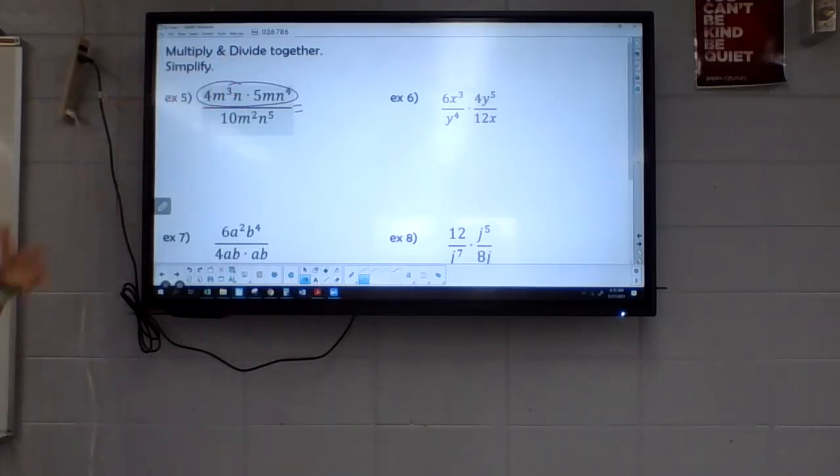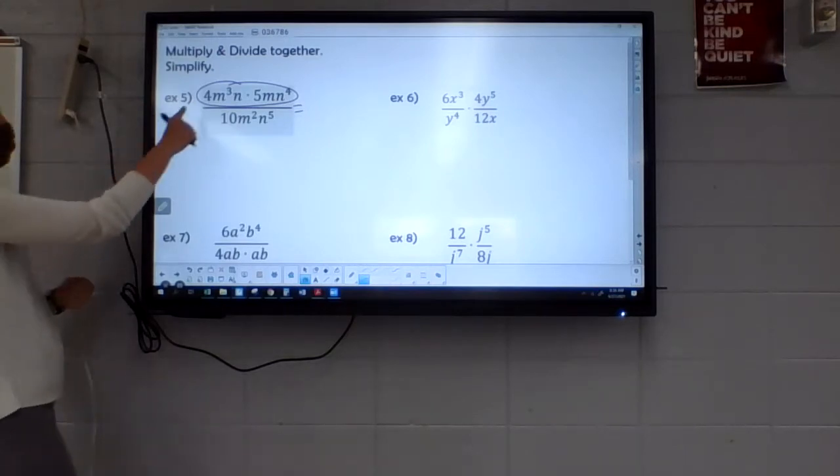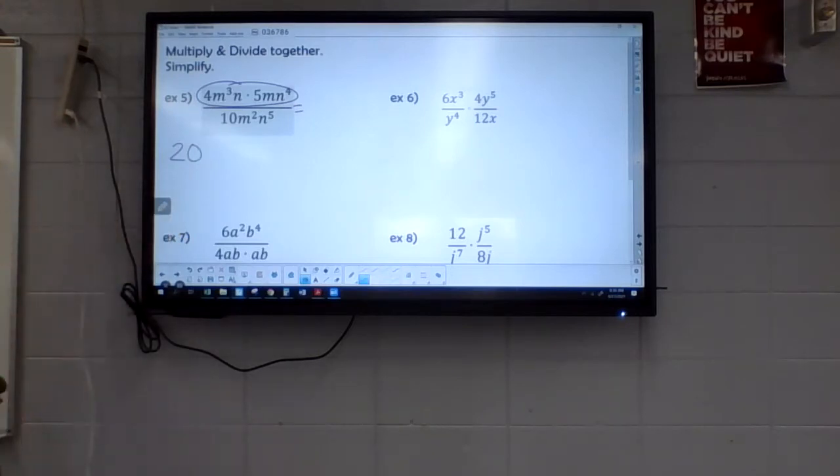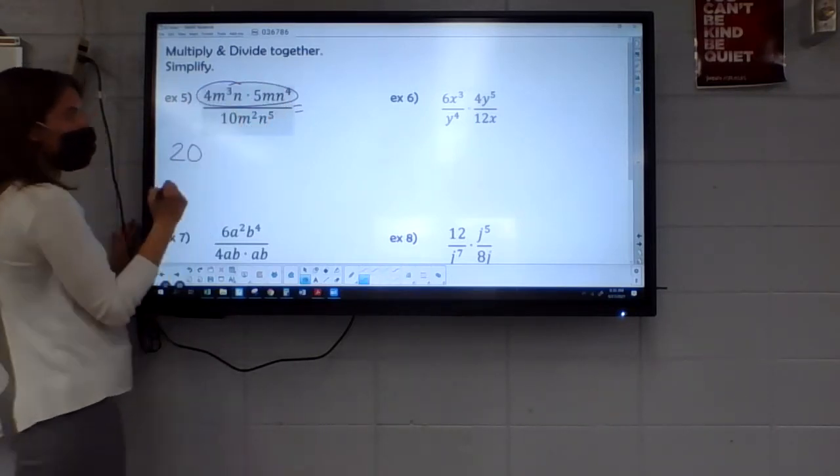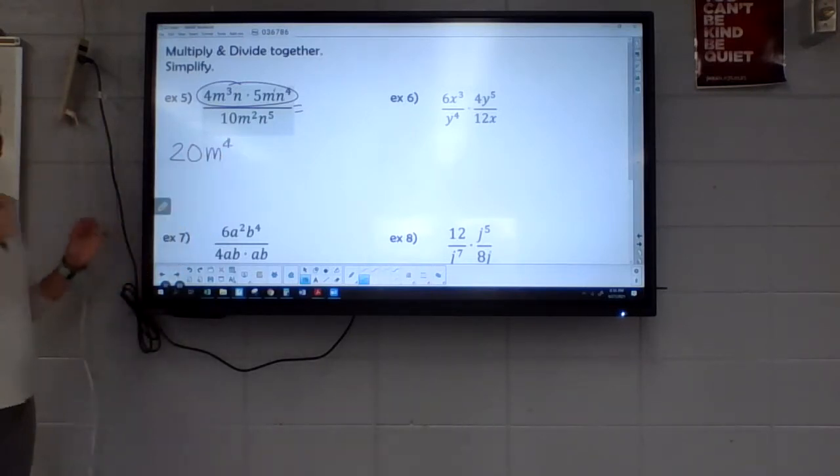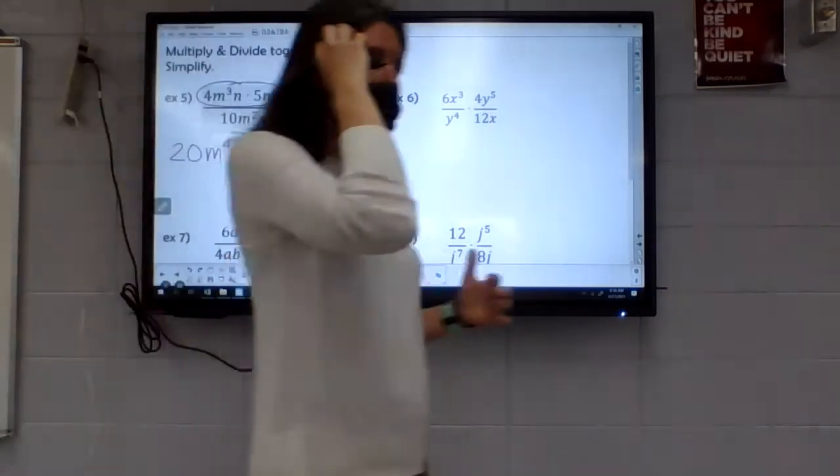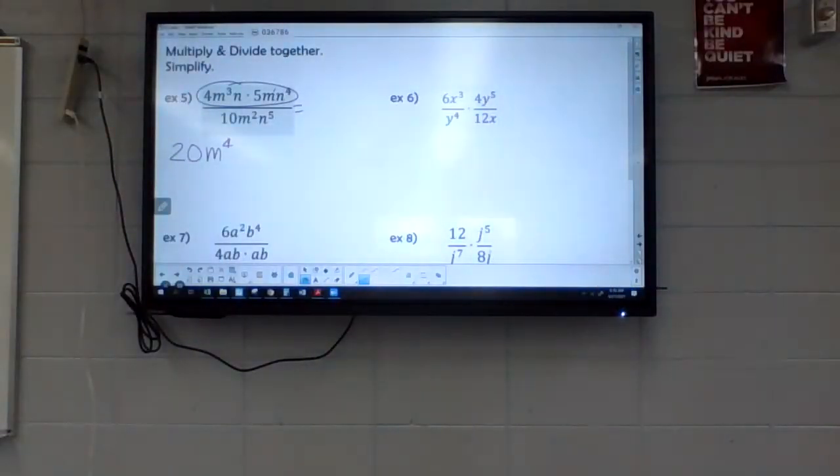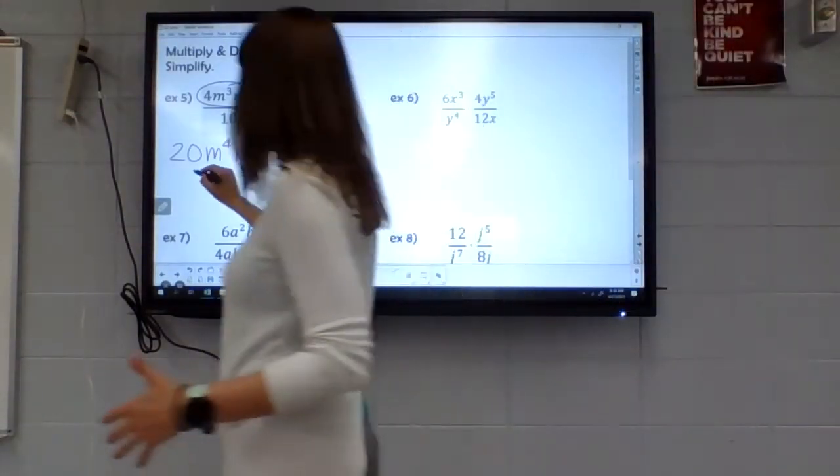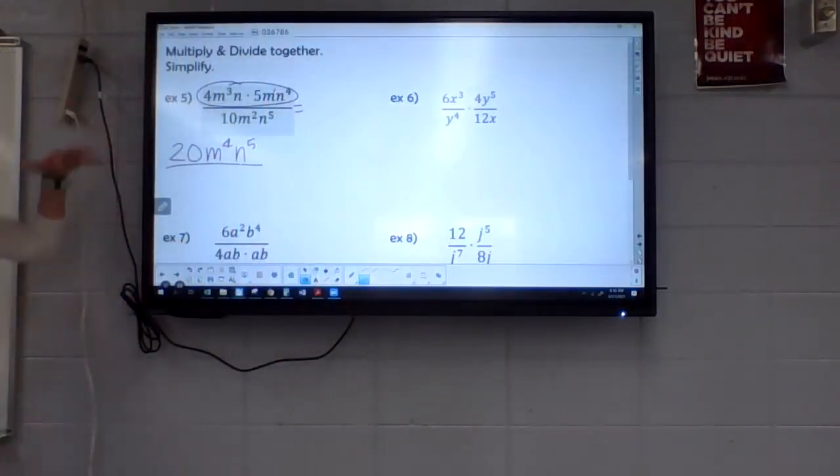So she wanted to multiply the coefficients first. I think you took care of the top first, right? Simplified the top a little bit. So she's basically multiplying the top. She multiplied 4 times 5 which is 20. Do you want to put those M's together right away on top? M to the third and M to the first is M to the fourth. One of the things to point out is we should be multiplying, so you have to think of all our multiplication rules from yesterday.